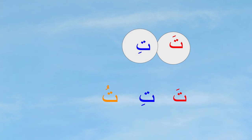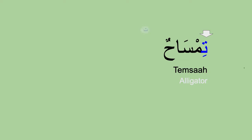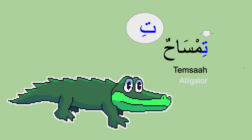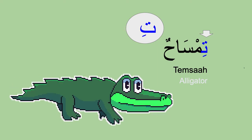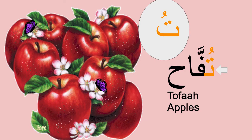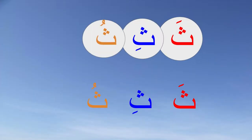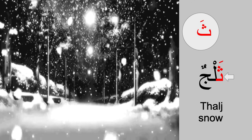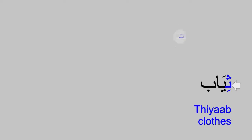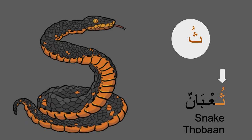The letter Ta with vowels: Ta, Ti, Tu — example word: Tamr (dates). The letter Tha with vowels: Tha, Thi, Thu — example words: Thalj (snow), Thiyab (clothes), Tha'ban (snake).